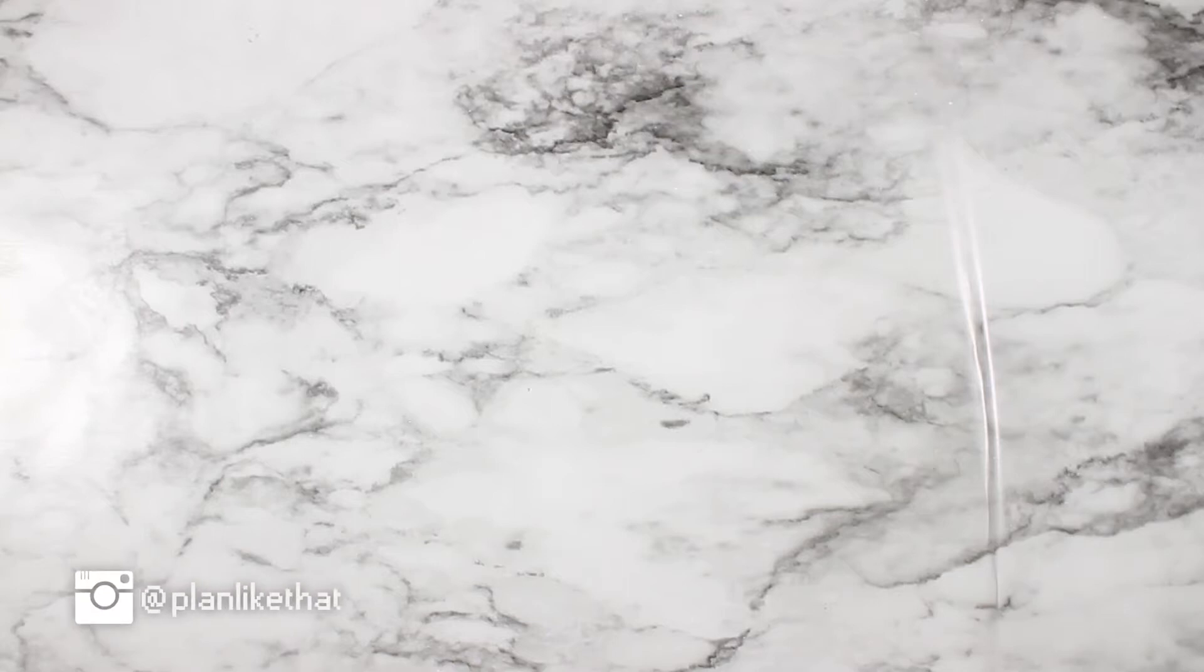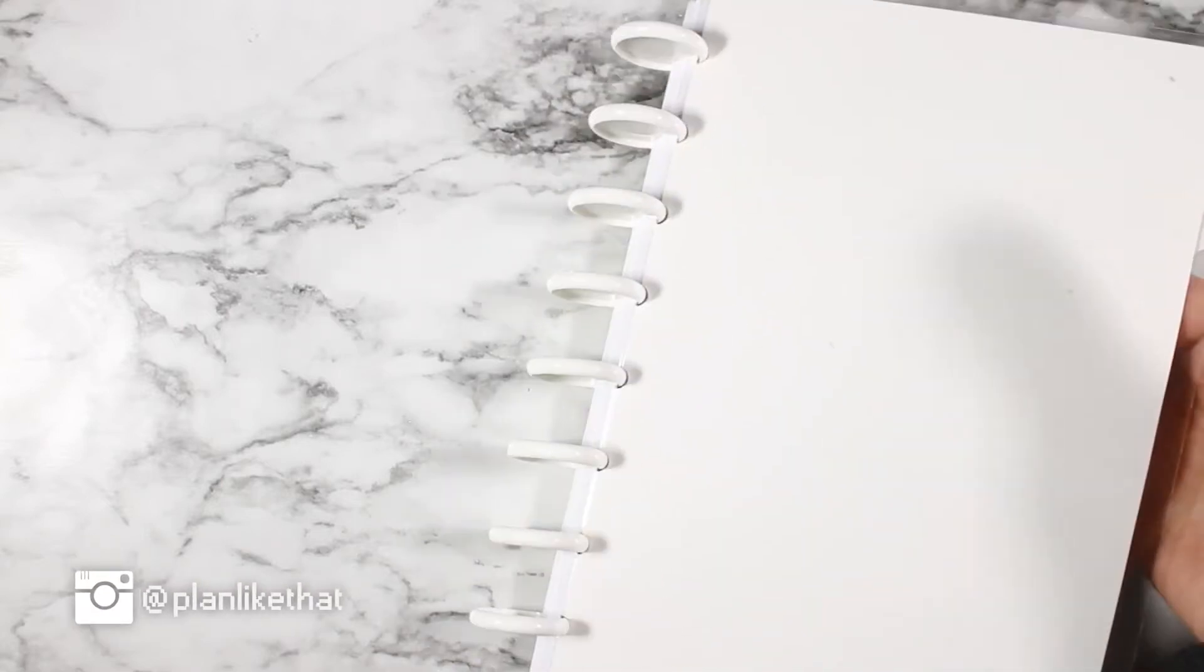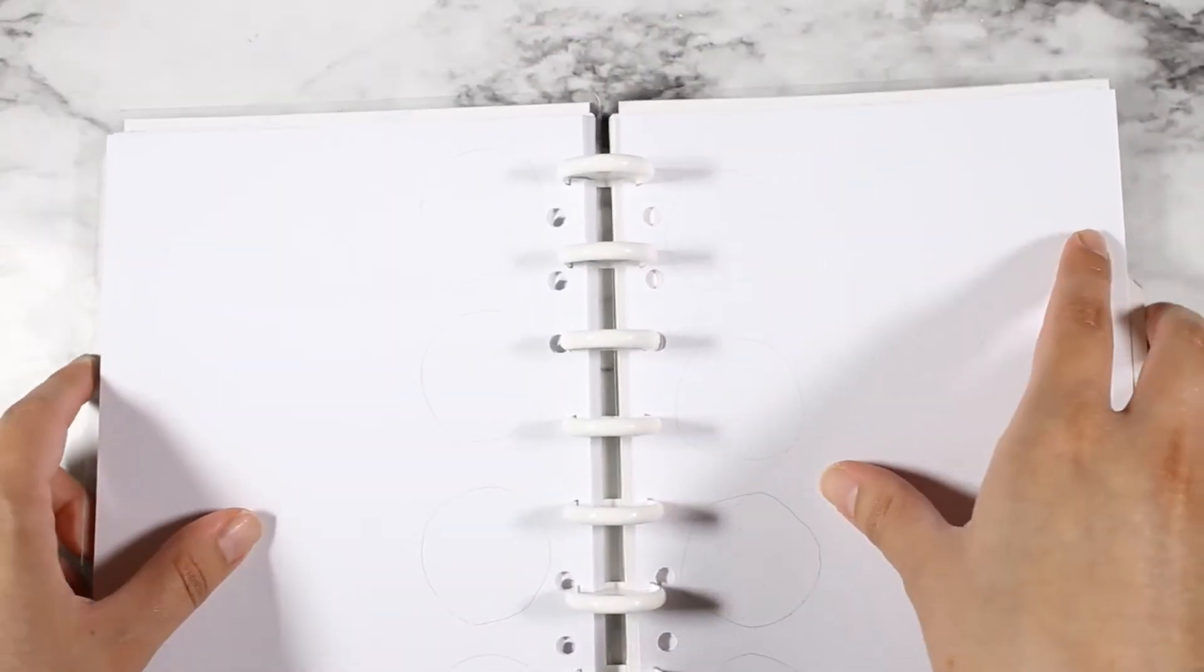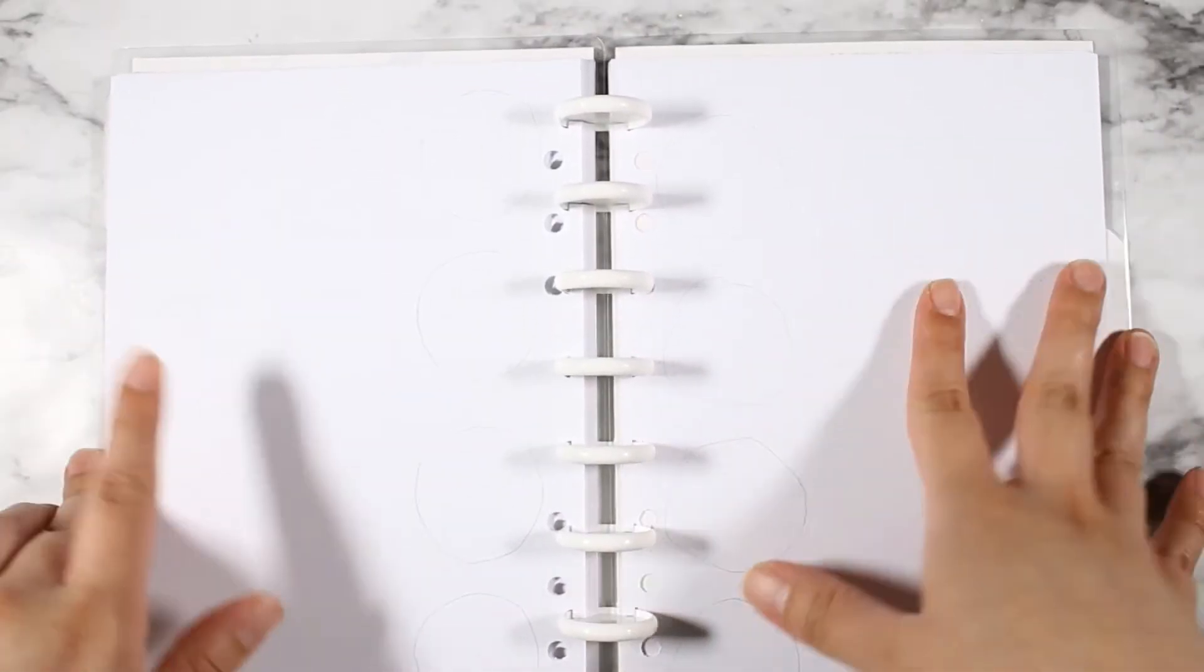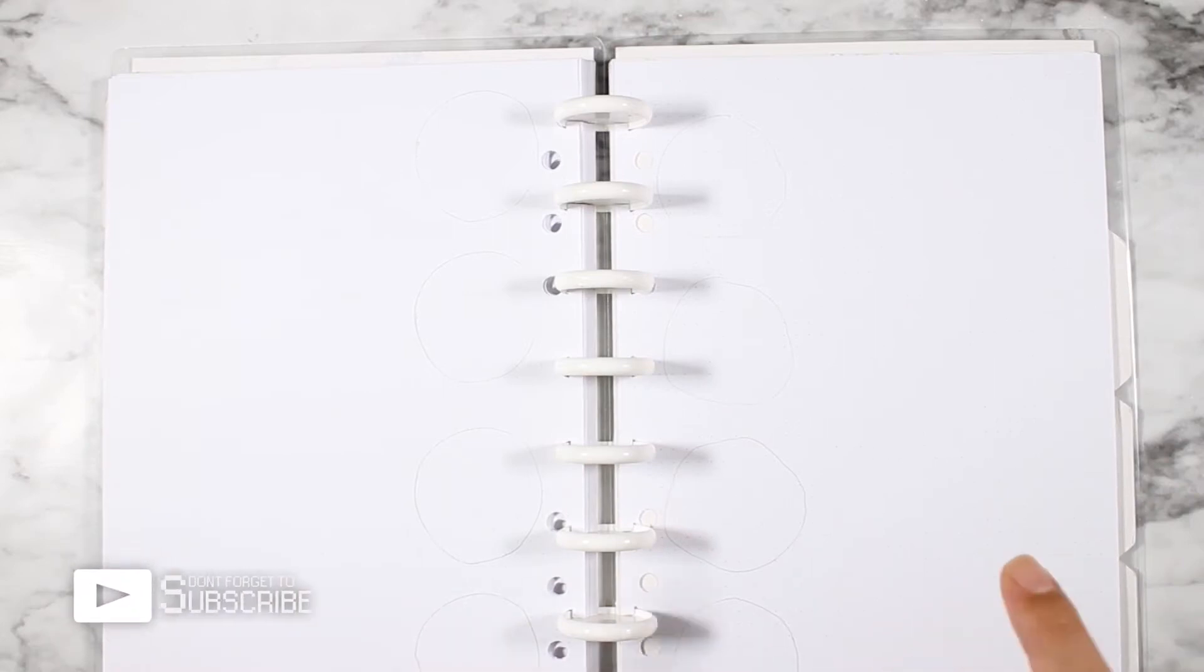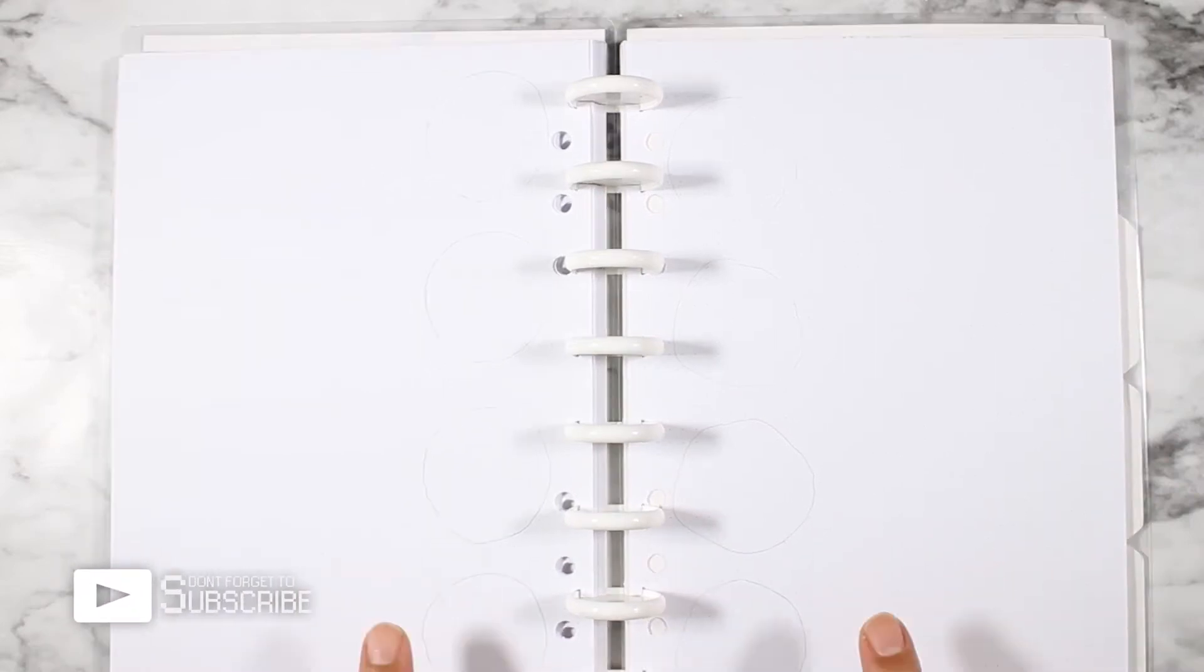Hello everybody, welcome back to another plan with me video this week. In this video, we will be setting up the second week of April. That is the week that starts on April 9th, I believe. Which means next Sunday is going to be May's monthly setup.